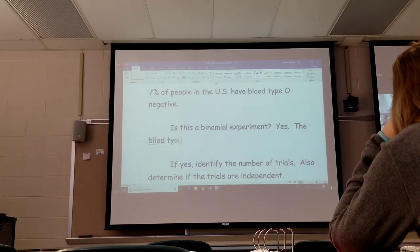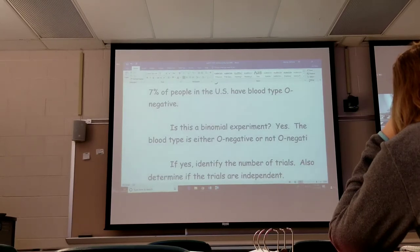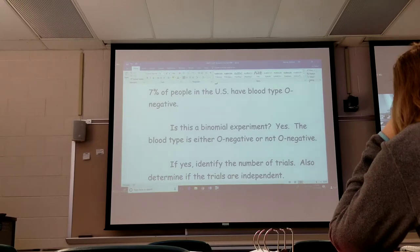The blood type is either O-negative or not O-negative. There's success or failure. It's either O-negative, success, or it's not O-negative, failure.